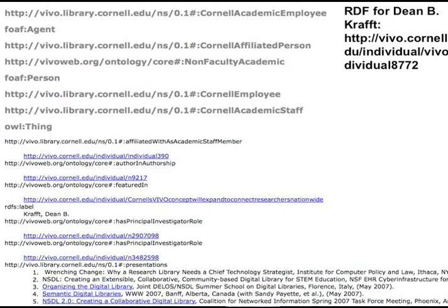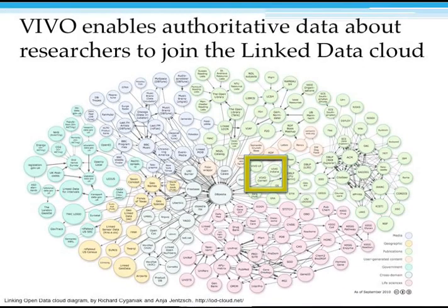Here's an RDF call — a little piece of it — if you go to my VIVO Cornell page and get back the RDF. Down at the bottom, you can see I have presentations I've given, my status relationships within the institution, and grants that I'm the PI on. VIVO enables authoritative data about researchers to join the linked data cloud.